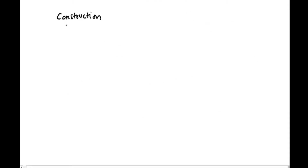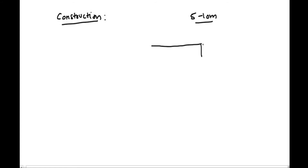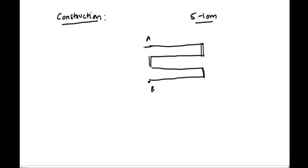Now let us see the construction and working of the potentiometer. Basically it is made up of wire — it has a wire of around 5 to 10 meters connected in segments: one meter wire, then a thick copper plate, again one meter wire, thick copper plate, and so on. It has several rounds of one-meter wire. Let's say point A and point B are the ends.